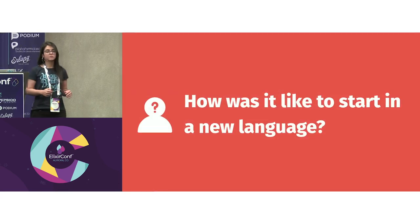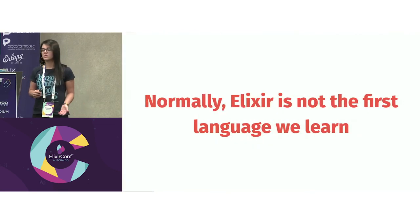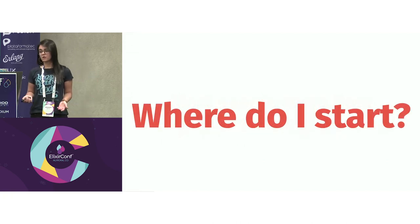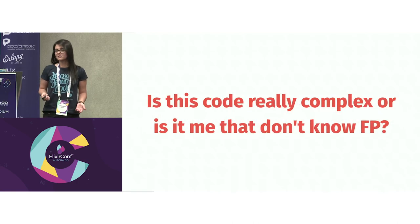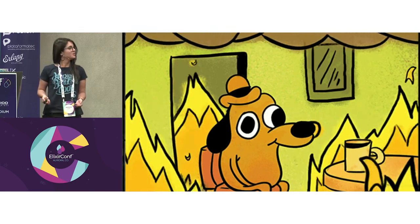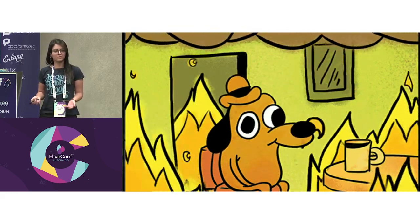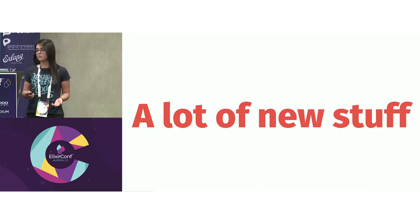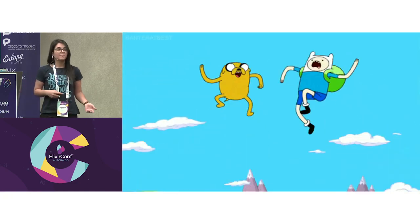One of the things people ask me the most is how it was to change language. Normally Elixir is not the first language we learn. Most people come from object-oriented languages, and when that is the case, there are questions: where do I start? How do I organize things now? I don't have objects anymore. I can't have state in objects anymore. Is this code really complex, or is it me that doesn't know functional programming enough? The first month can be harder, with questions like: am I writing object-oriented in functional programming? Am I writing Python in Elixir? It is a lot of new stuff to take in at one time — a new project, a new language, a new paradigm.